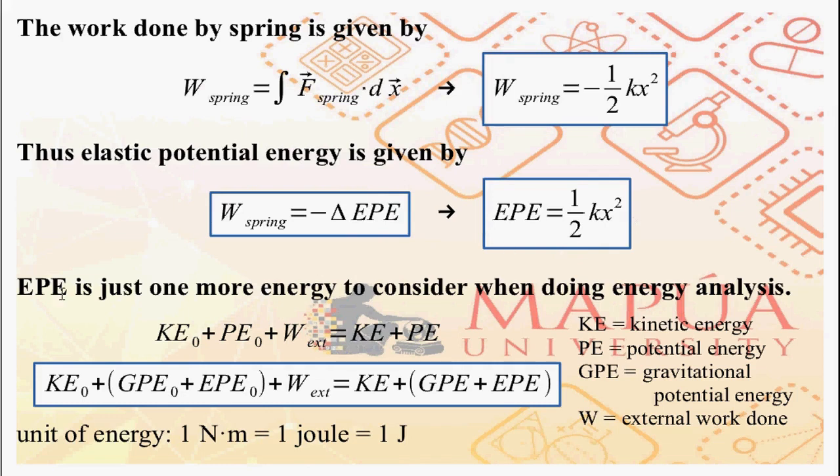The elastic potential energy is just one more energy that you need to consider when doing energy analysis. So in addition to gravitational potential energy, you also need to consider elastic potential energy. So initial elastic potential energy, final elastic potential energy. And of course, unit of energy is joules.